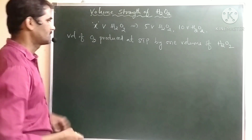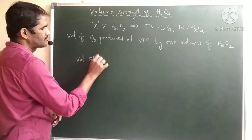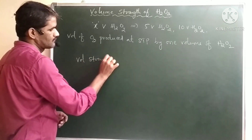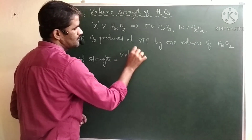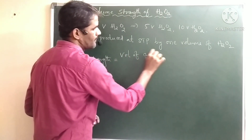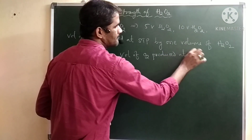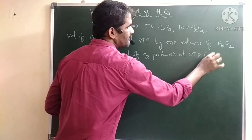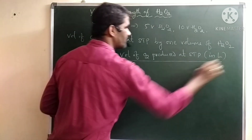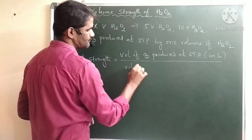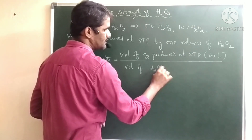If you want to write it in equation form, the formula is: volume strength equals volume of oxygen produced at STP — expressed in liters — divided by volume of H2O2, also in liters.